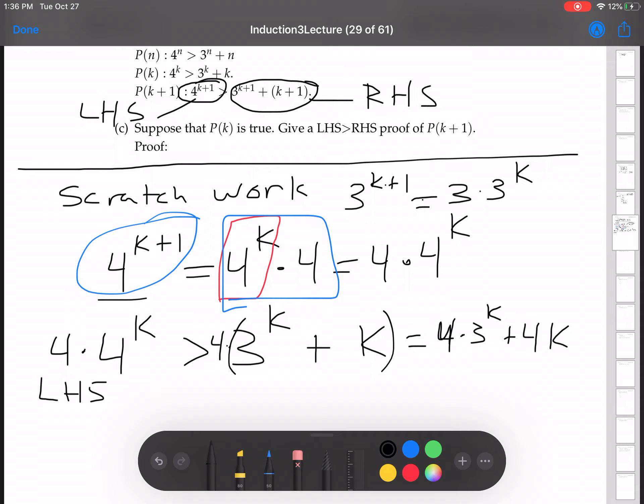Now you just have to ask yourself, is 4 times 3 to the k bigger than 3 to the k plus 1? It is, right? It's bigger than 3 times 3 to the k, which is 3 to the k plus 1. And then 4 times k, is 4 times k bigger than k plus 1? Well, sure it is, because that's k plus k. That's 4 k's.